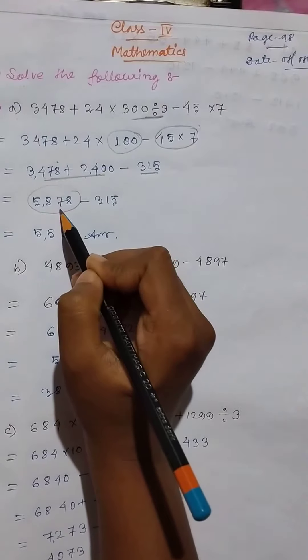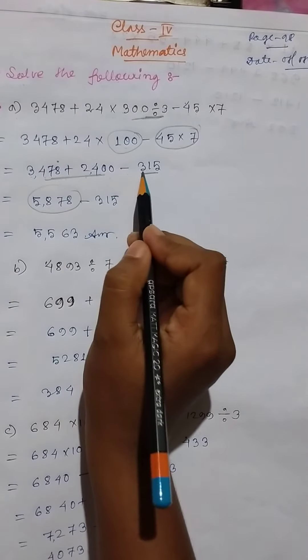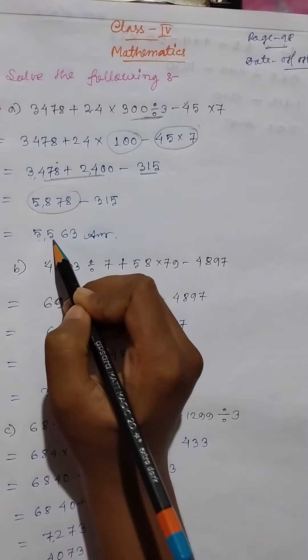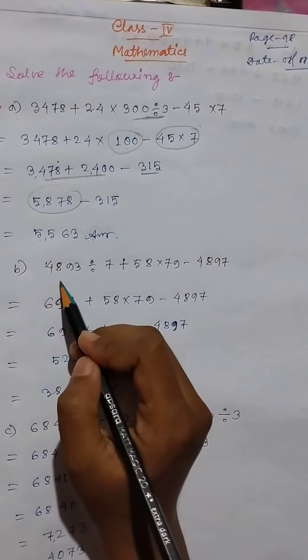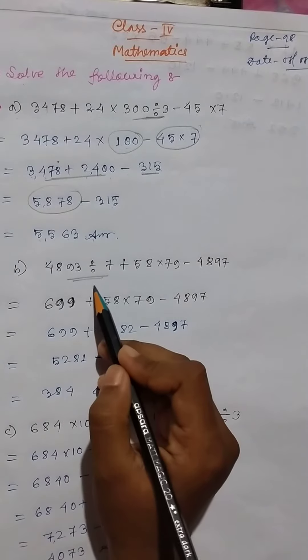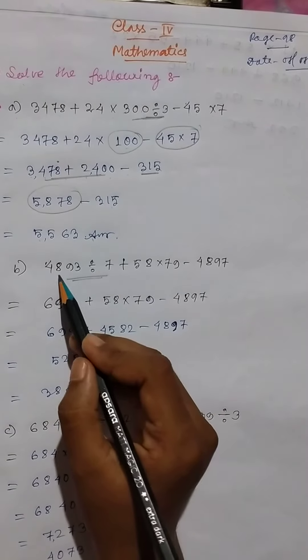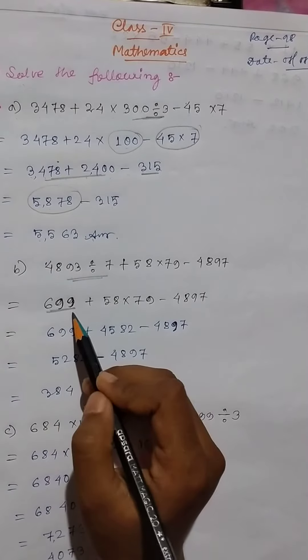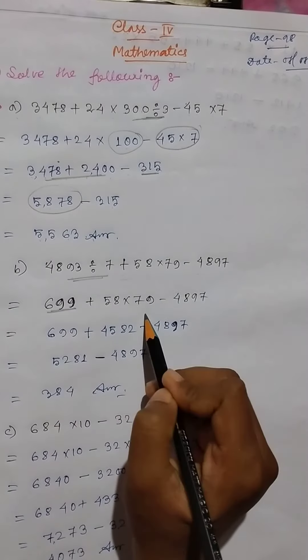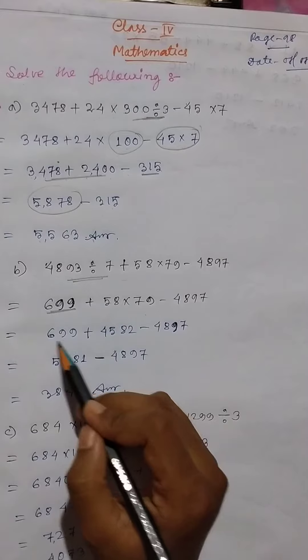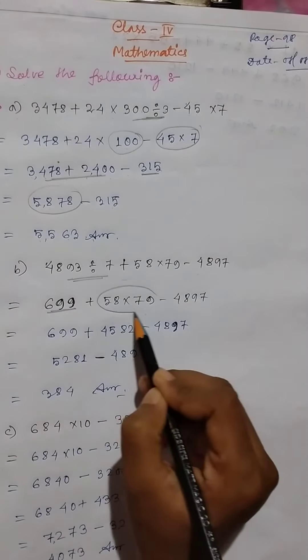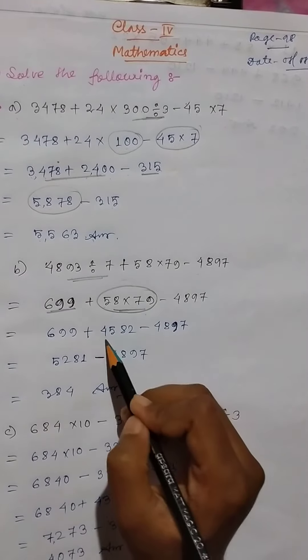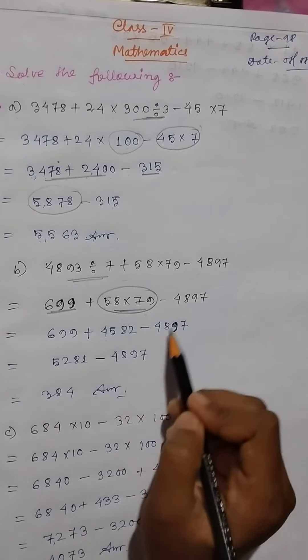Then minus 315. 5878 minus 315 equals 5563. Then same here. And then 699 plus, here multiplication, 58 into 79 is 4582. Then same here.